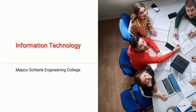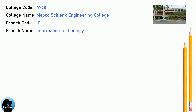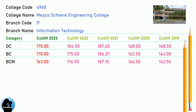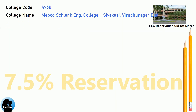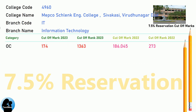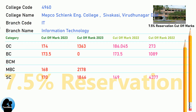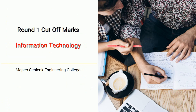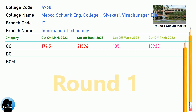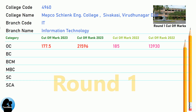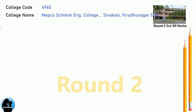Cut-off for Mepco Schlenk Engineering College in Information Technology. 7.5 Reservation Cut-off, Round 1 Cut-off, and Round 2 Cut-off for Mepco Schlenk Engineering College in Information Technology.